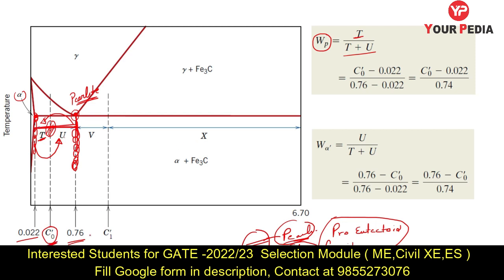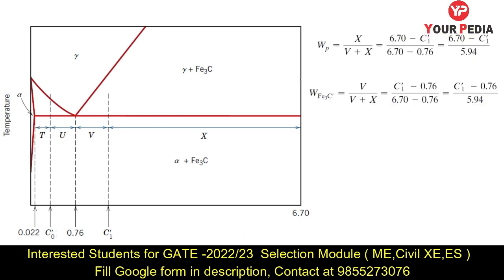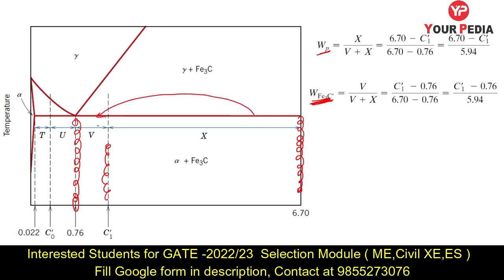If composition is given on the right side of the eutectoid point, the phases present are pearlite and iron carbide. The right side region is rich in iron carbide. For this case, draw a horizontal tie-line with segments V and X. To calculate weight percentage of iron carbide, take the opposite segment V divided by V plus X. To calculate weight percentage of pearlite, take the opposite segment X divided by V plus X.